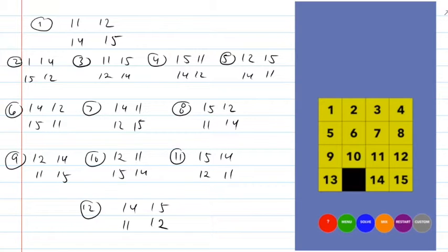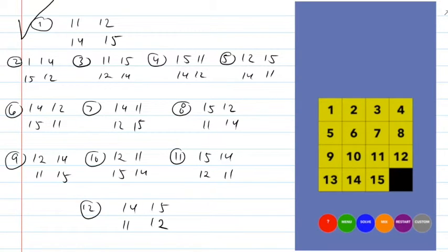Configuration number one: eleven, twelve, fourteen, and fifteen are already in place — the puzzle is done, just move them over. That's case one. There are eleven others, and they get more complicated, but the next four configurations all share the same strategy.